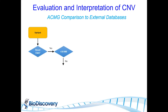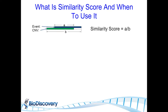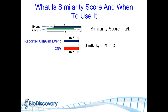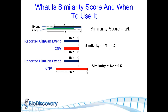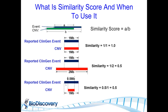If a variant is novel and less than 10 megabases, we consider comparison to external databases like ClinGen or Decipher. We again use the similarity score, comparing the overlapping area of our region with a previously reported region of interest. A ClinGen event of the same length gives a similarity of 1.0; a reported ClinGen event much smaller than ours lowers the score; and if our event is smaller than the reported ClinGen event, we also lose similarity. We focus on areas highly similar to previously reported cases in ClinGen databases.